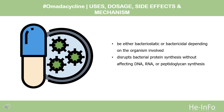Omadacycline can be either bacteriostatic or bactericidal, depending on the organism involved. It disrupts bacterial protein synthesis without affecting DNA, RNA, or peptidoglycan synthesis. Omadacycline represents an improvement over existing tetracycline agents as it has not been found to be subject to tetracycline resistance mediated by tetracycline efflux pumps encoded by TET(K), TET(L), and TET(B), or to ribosomal protection proteins encoded by TET(O) and TET(M). Omadacycline is susceptible to RNA mutations which confer resistance to tetracyclines.